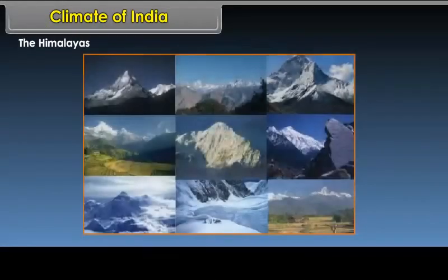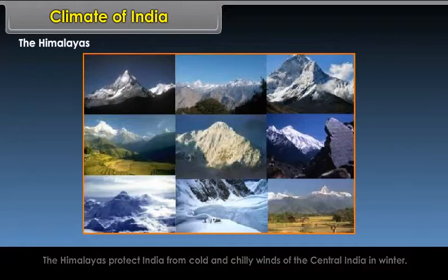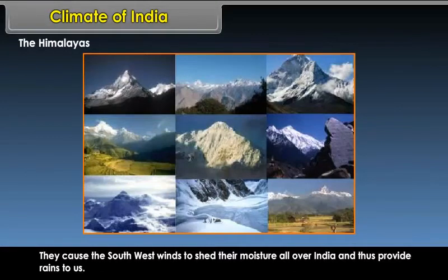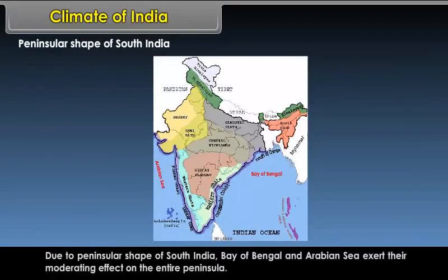The Himalayas protect India from the cold and chilly winds of central Asia in winter. They cause the southwest winds to shed their moisture all over India and thus provide rains to us. Due to the peninsular shape of South India, the Bay of Bengal and Arabian Sea exert their moderating effect on the entire peninsula.